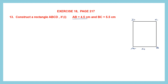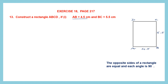AB is 4.5 centimeters, so this side is smaller than the other side BC which is 5.5 centimeters. Now we know that the opposite sides of a rectangle are equal and each angle is 90 degrees. So that means if AB is 4.5 centimeters, the opposite side CD will also be 4.5 centimeters. Similarly BC is 5.5 centimeters, so the opposite side AD will also be 5.5 centimeters. And each angle is equal to 90 degrees.